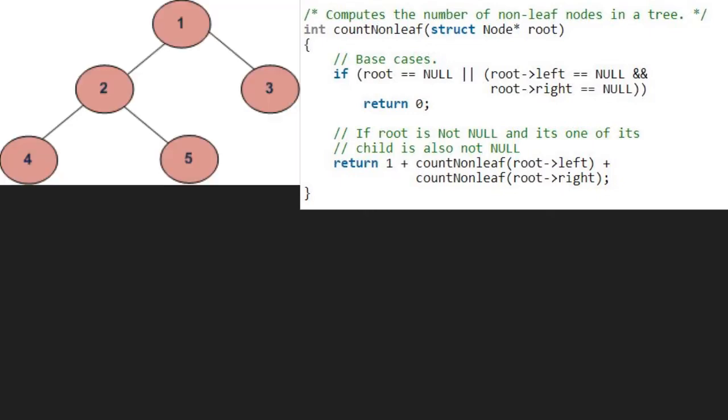We pass the root node which is 1 to function count non-leaf. So, root will point to 1. Since node is not null and once left and right are not null, we omit the first if.